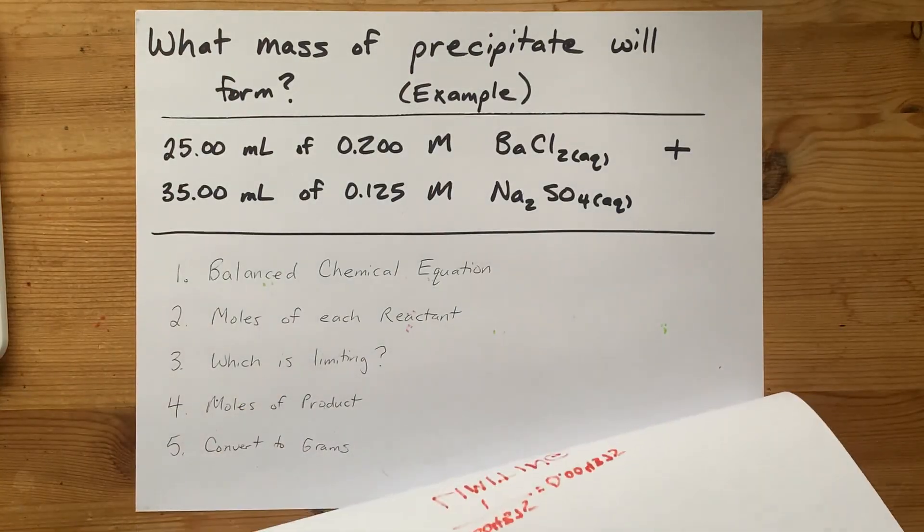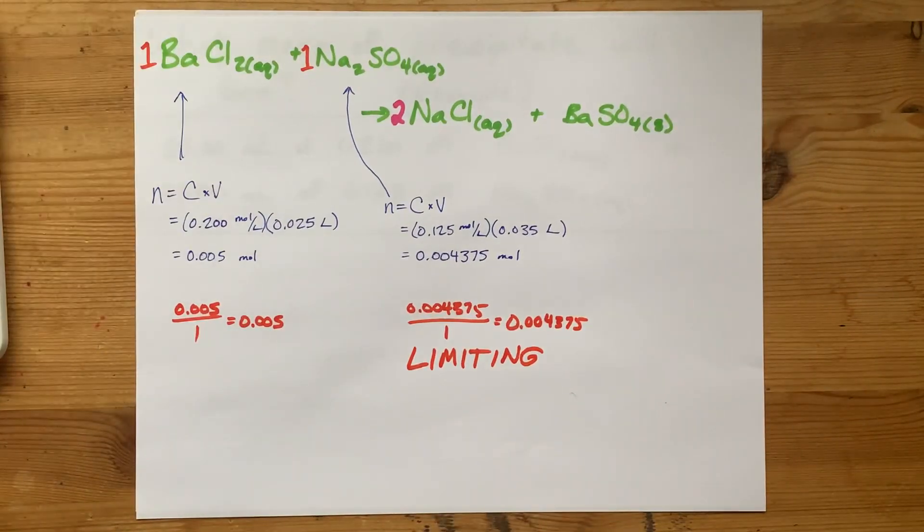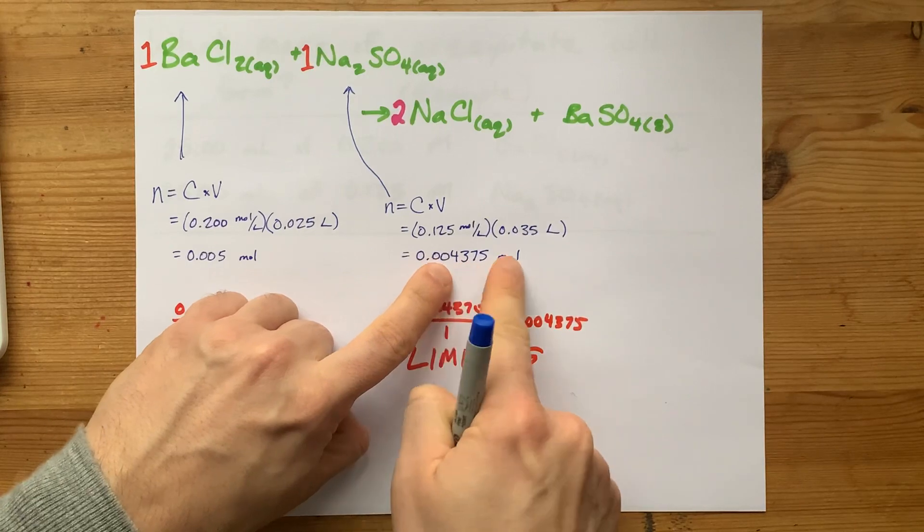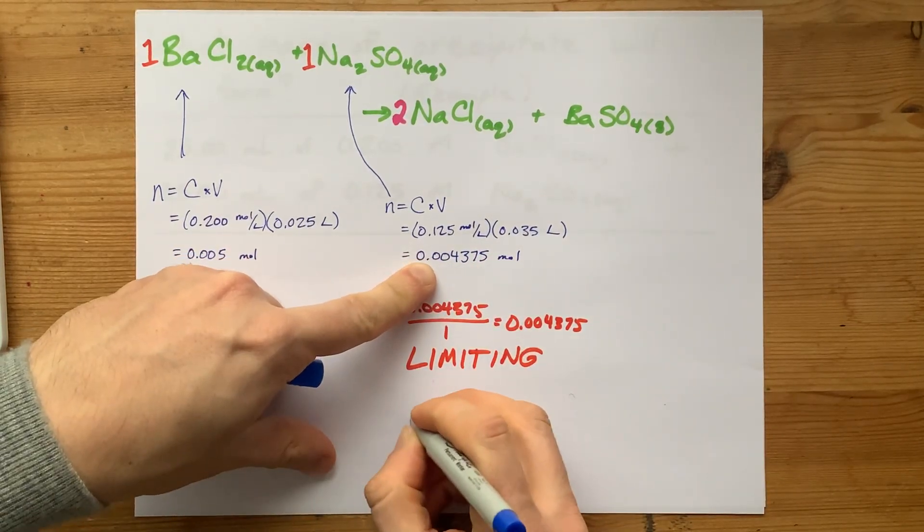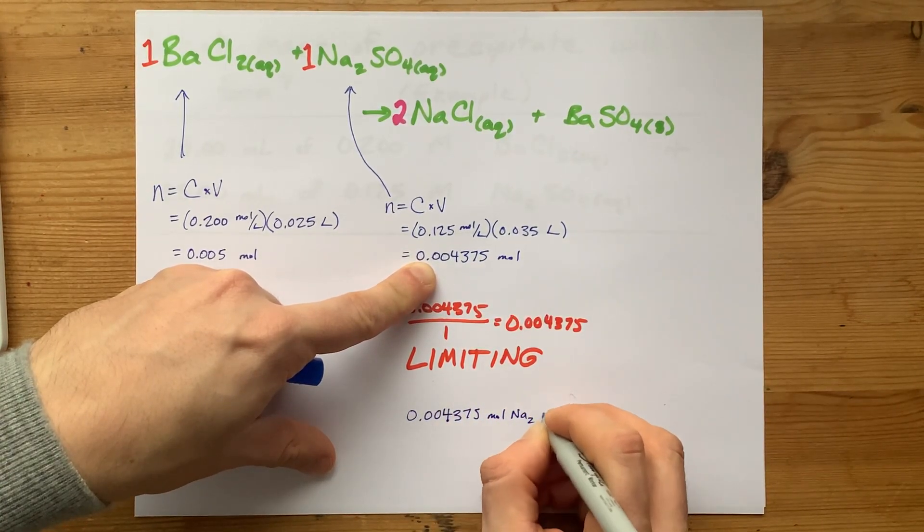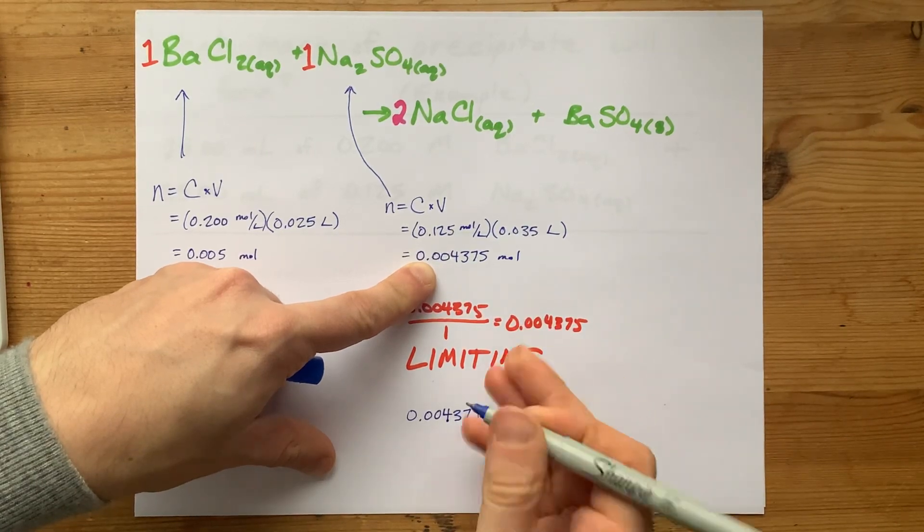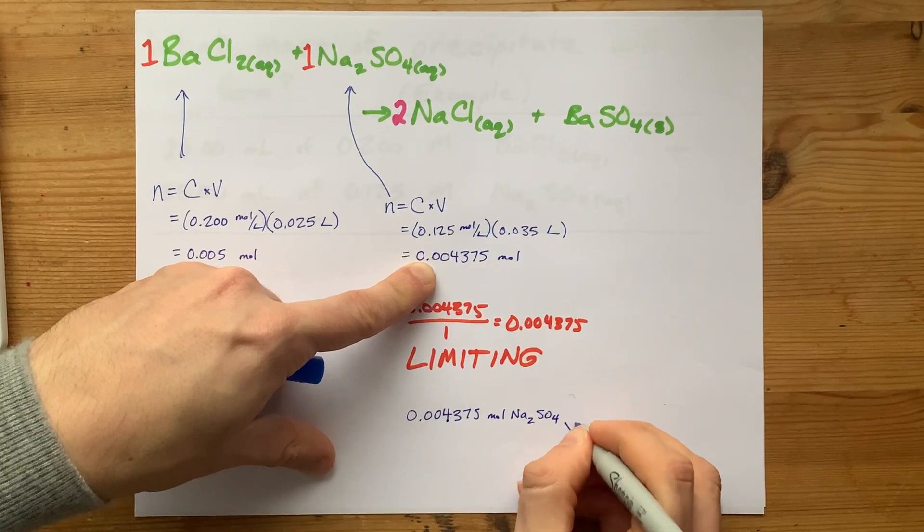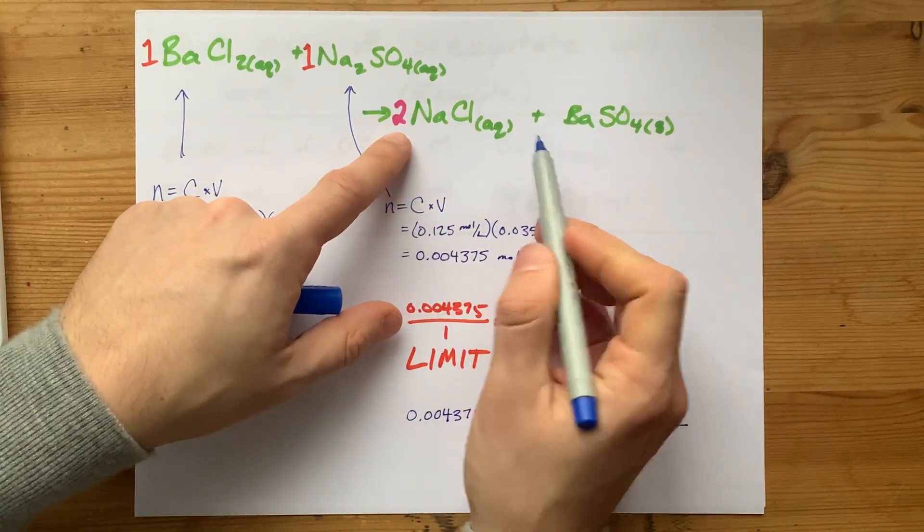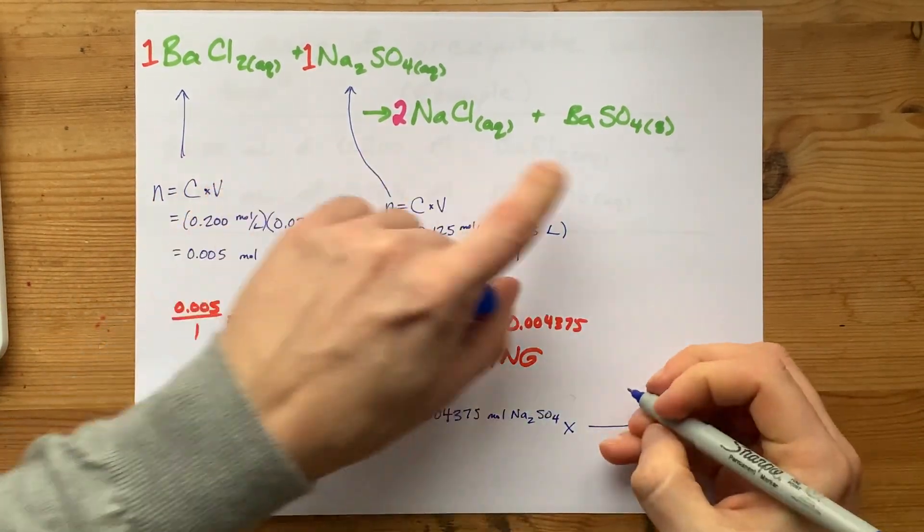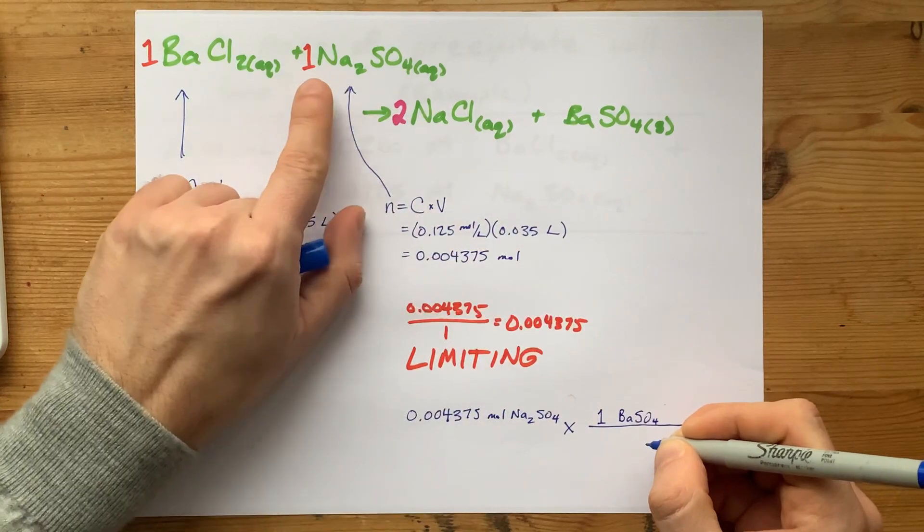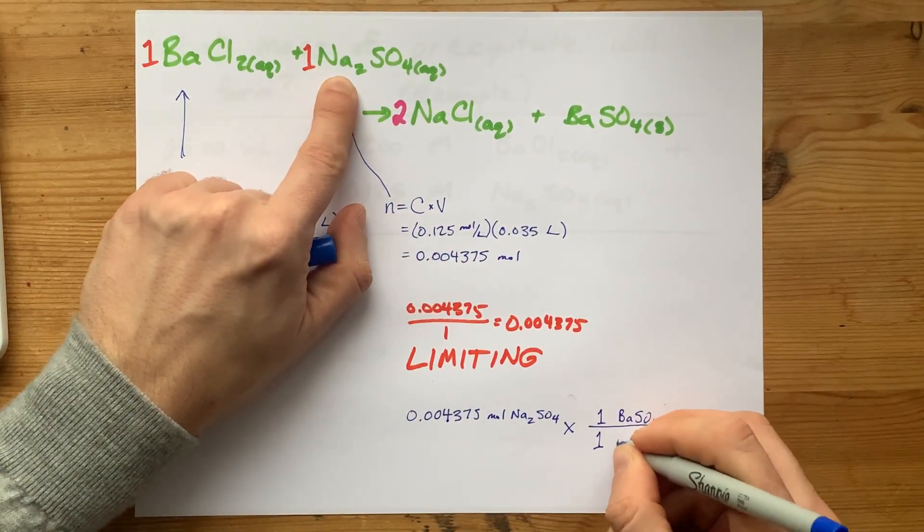Now we're going to have to figure out how many moles of product actually formed. You do that by starting with the number of moles of the limiting reactant. In our case, 0.004375 moles of Na2SO4. And I'm going to use a mole ratio. I multiply by a fraction. And on top of the fraction is the coefficient of the thing that I'm solving for. I'm looking for BaSO4.